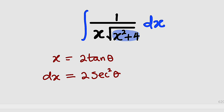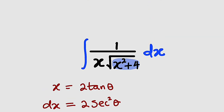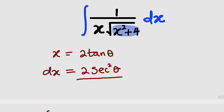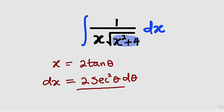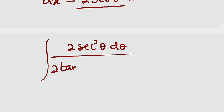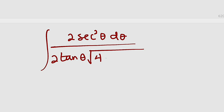Now let us back-substitute. Our integral becomes the integral of, in the numerator, 1 dx, where dx is 2 secant squared theta d theta. We divide by x, which is 2 tan theta, multiplied by the square root of x squared plus 4. Since x is 2 tan theta, we square it before adding 4, giving us 4 tan squared theta plus 4.